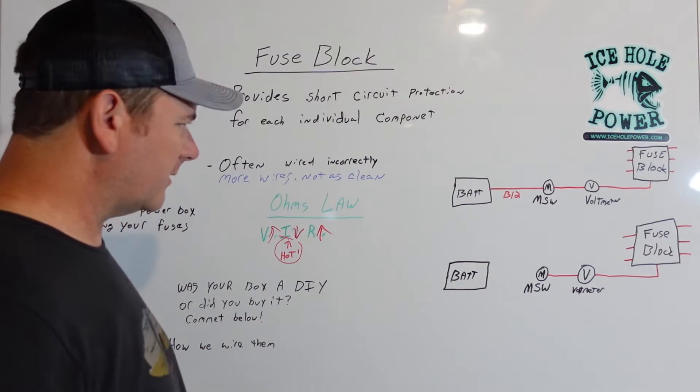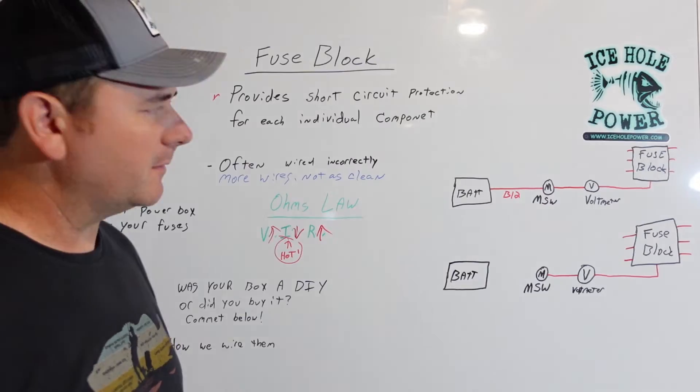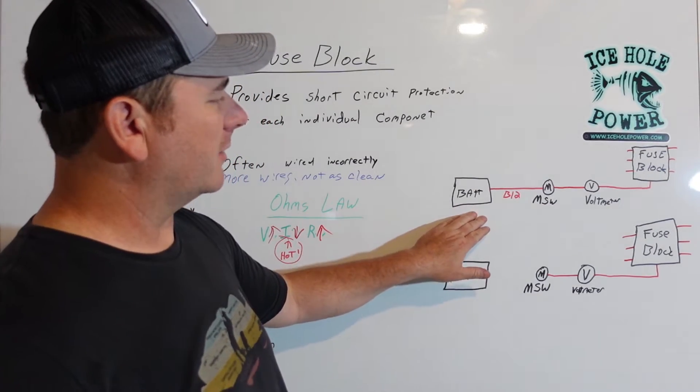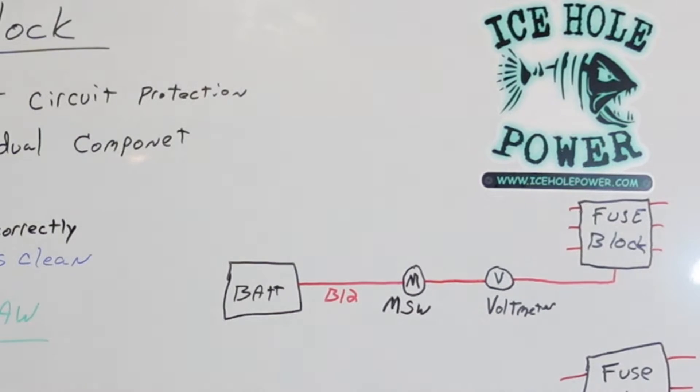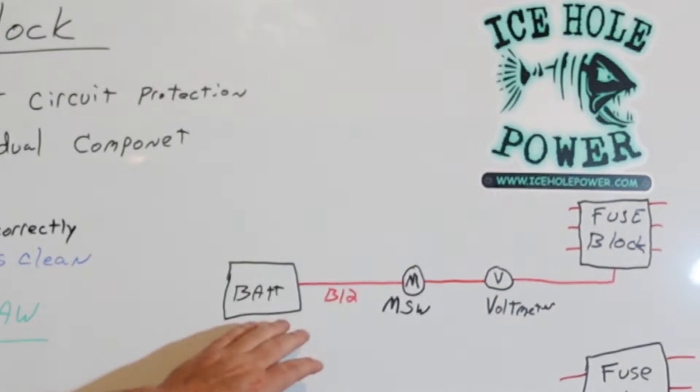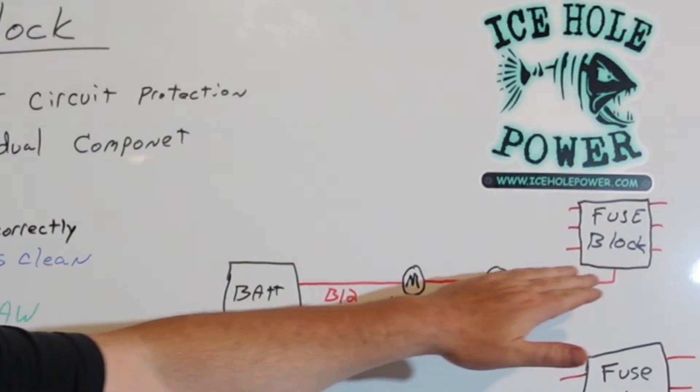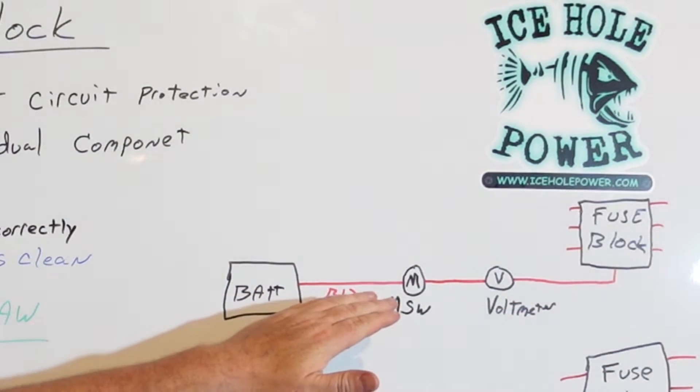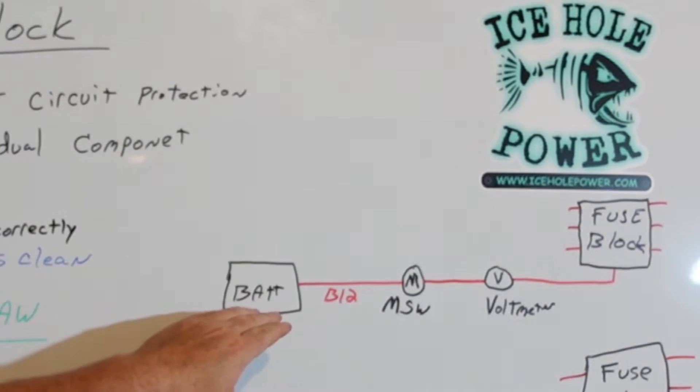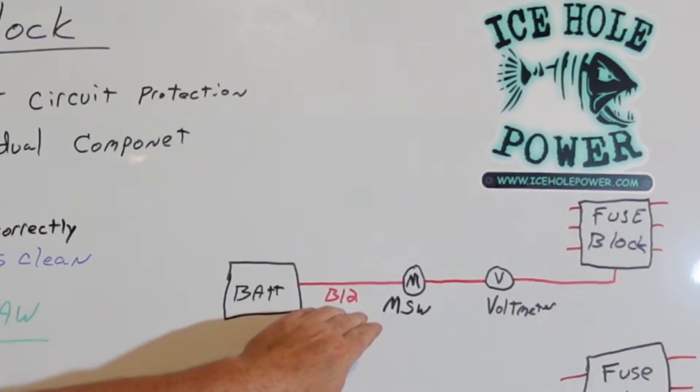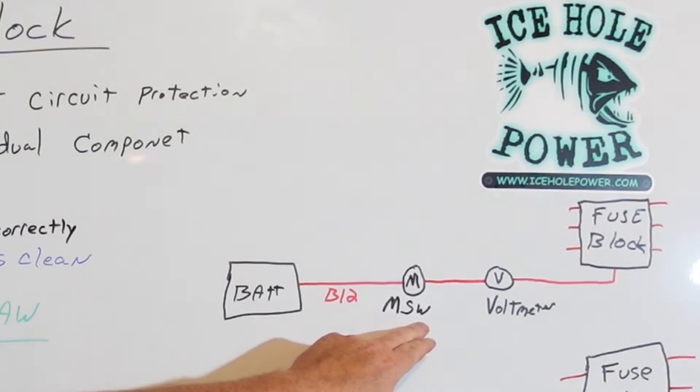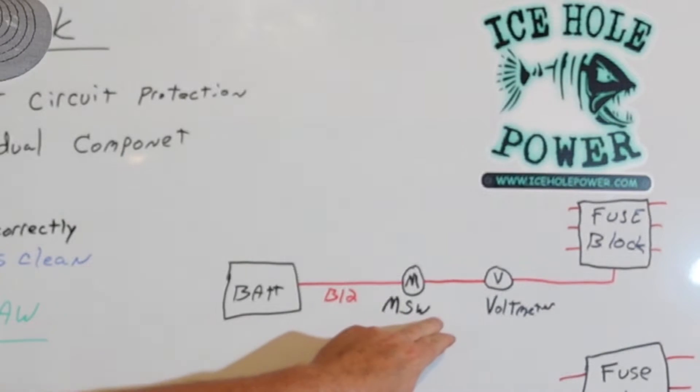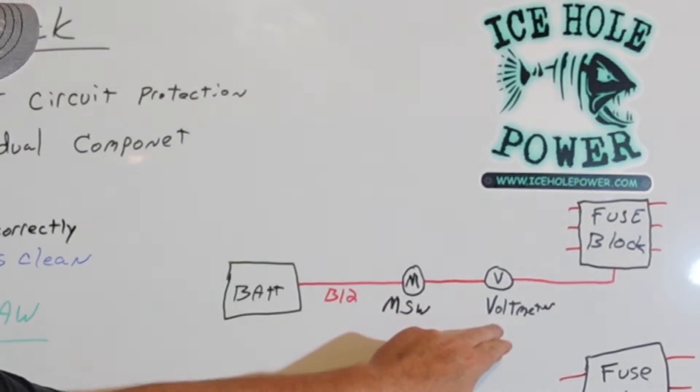So just out of curiosity, you don't need a name drop or anything. But so this is your battery. This is the B12. So B12 is the positive battery. So you got B12. This is a typical how most of them are wired up that I've seen. Battery, B12 going straight to the master switch, MSW, master switch. And then your B12 from master switch going to a volt meter.